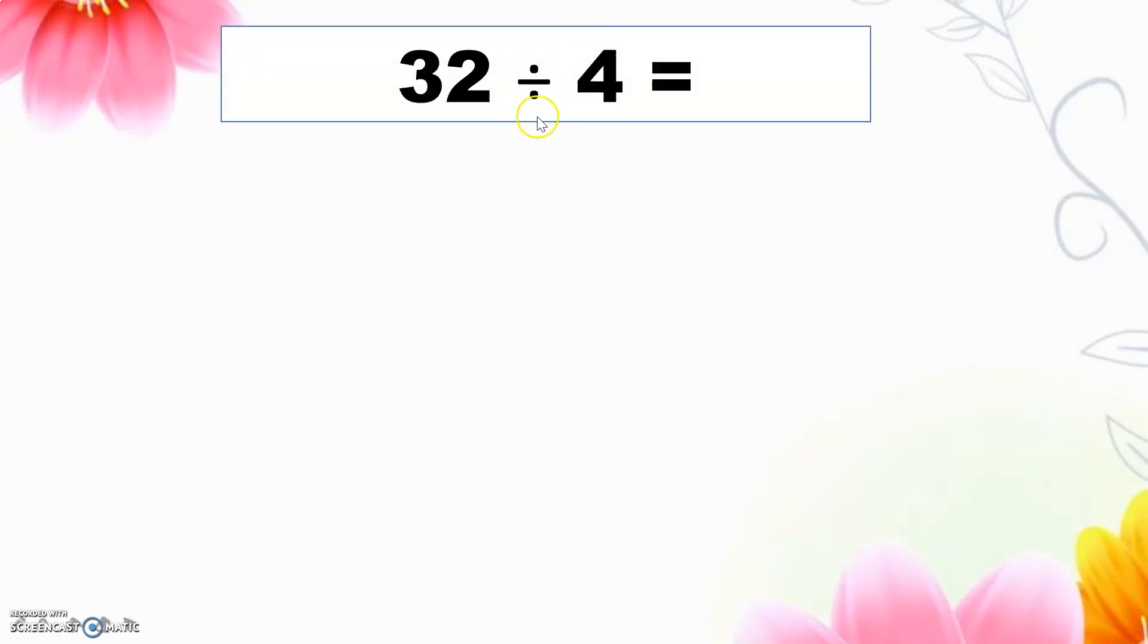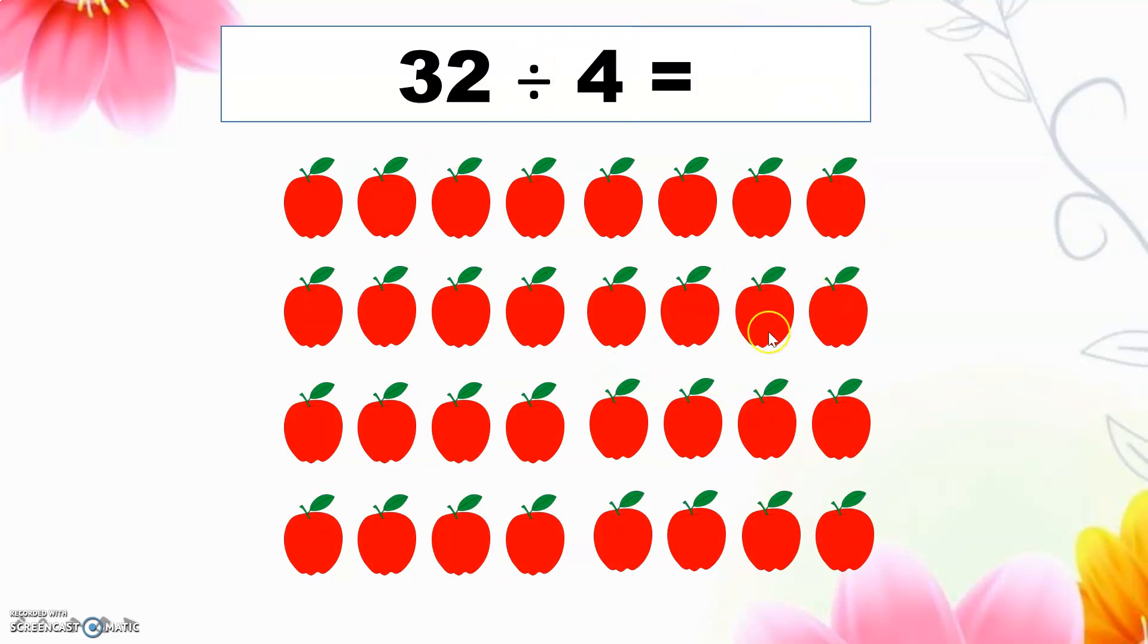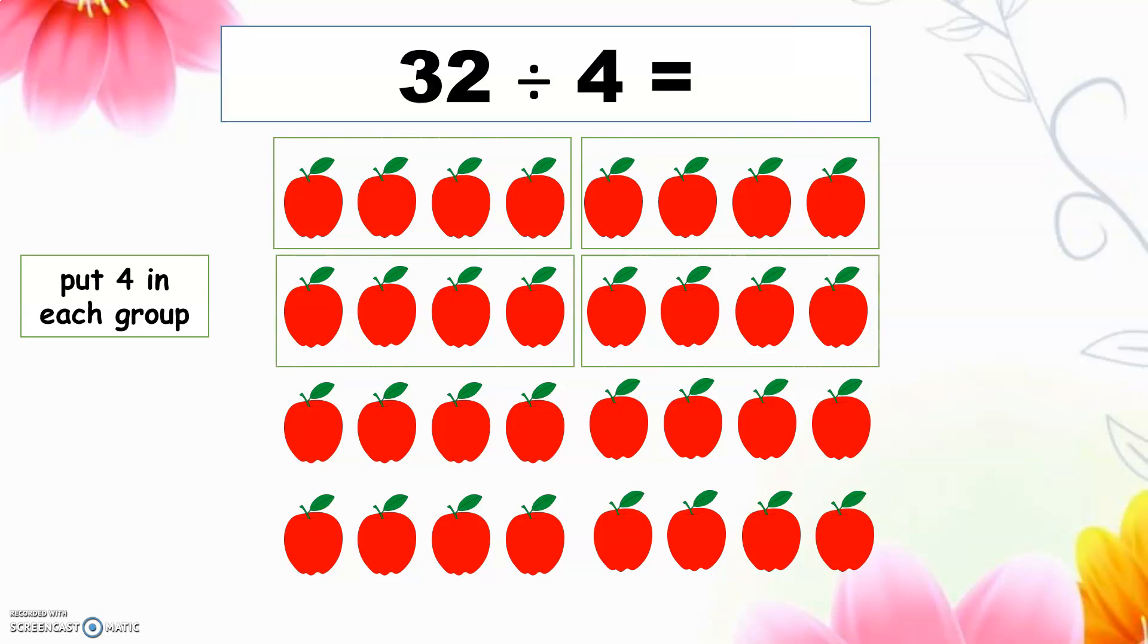32 divided by 4 equals, that means I have 32 objects and I divide it into 4 to each group. And I want to know how many groups. Here are 32 apples. You can draw any apples, circles or flowers, which objects you like. Make sure all the objects are same. So here are 32 apples and I want to make 4 in a group. That means I can circle 4 or box into 4 in a group. Put 4 in each group.